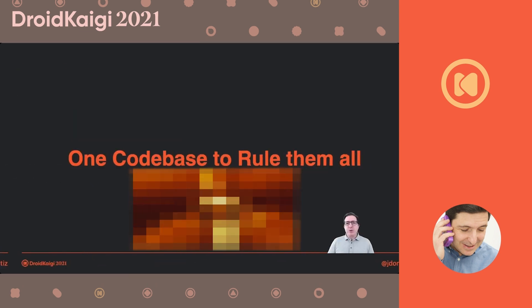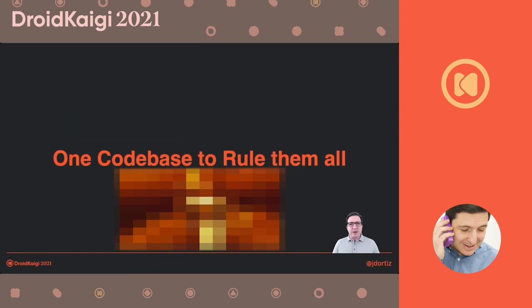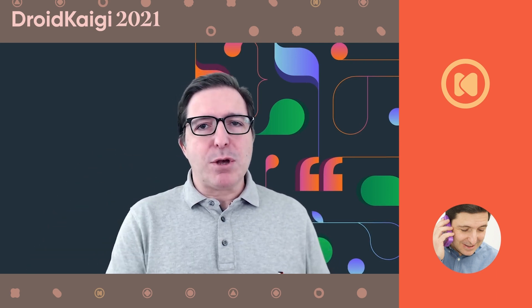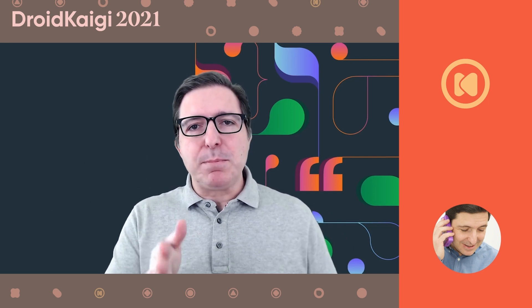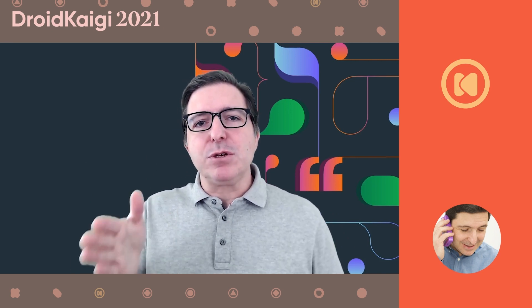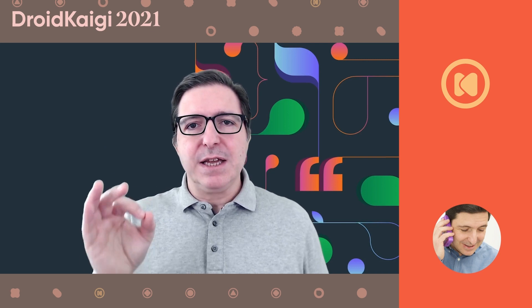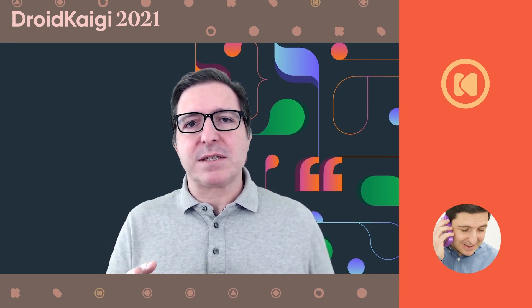How do we do that? The goal is to have a single code base that contains all the code, even while in development. This code is not something that we retain while we continue developing it, but something that we will be shipping continuously to the final user. That is the key behind feature flags.